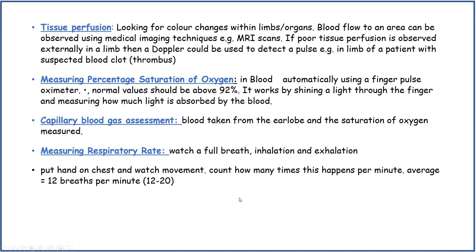Tissue perfusion also involves looking for colour changes within limbs or organs. Blood flow to an area can be observed using medical imaging techniques or MRI scans. If poor tissue perfusion is observed externally in a limb, a Doppler could be used to detect a pulse — for example, in a limb of a patient with suspected blood clot or thrombosis.